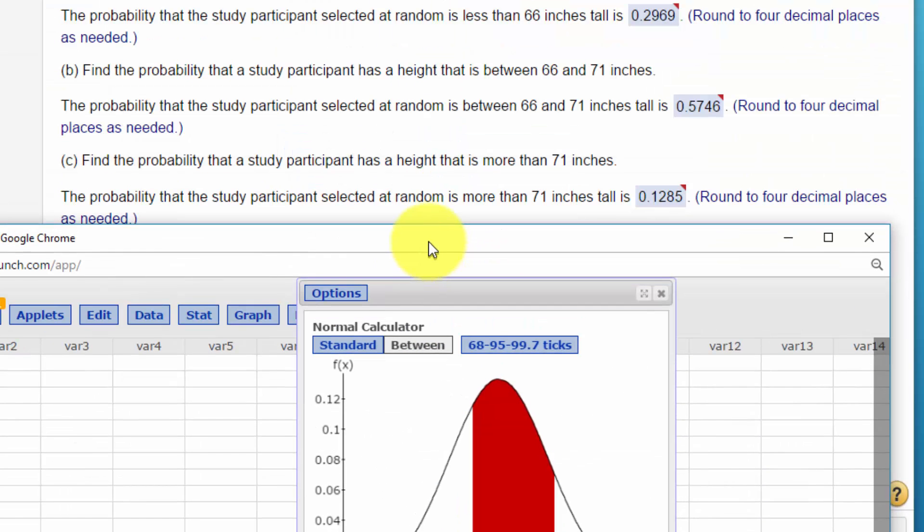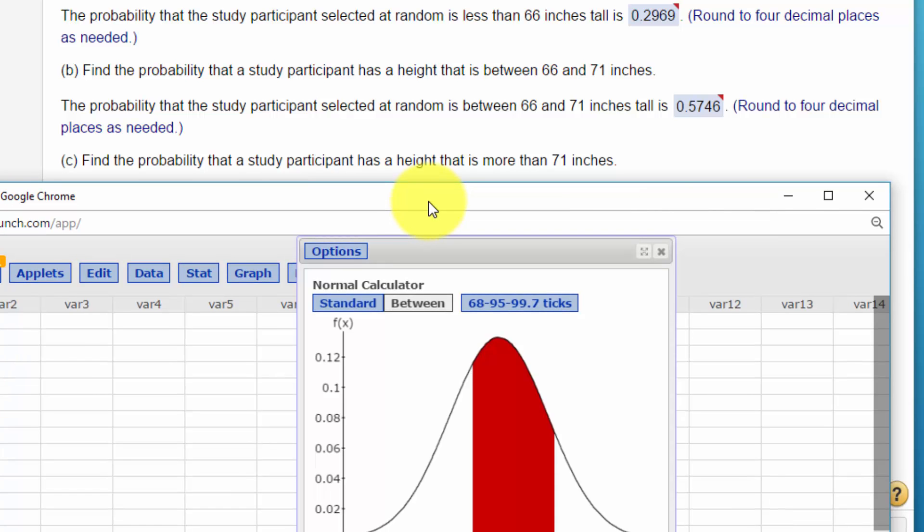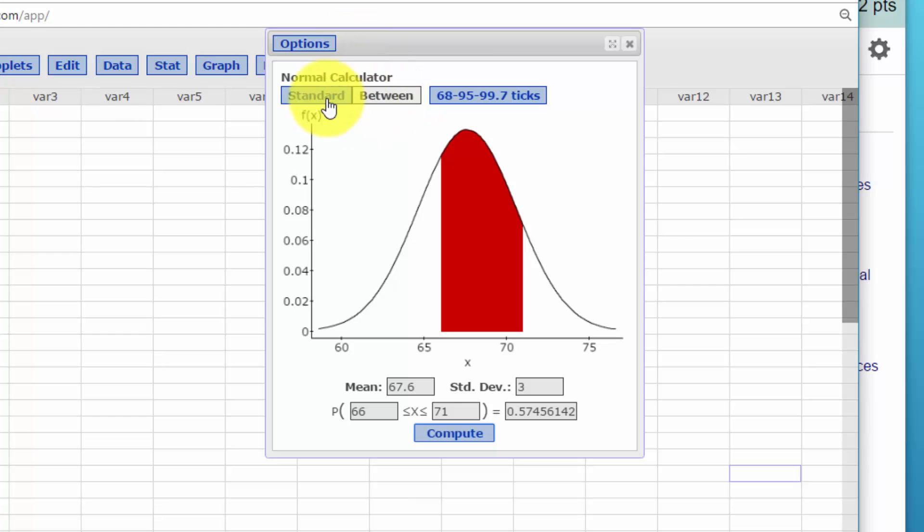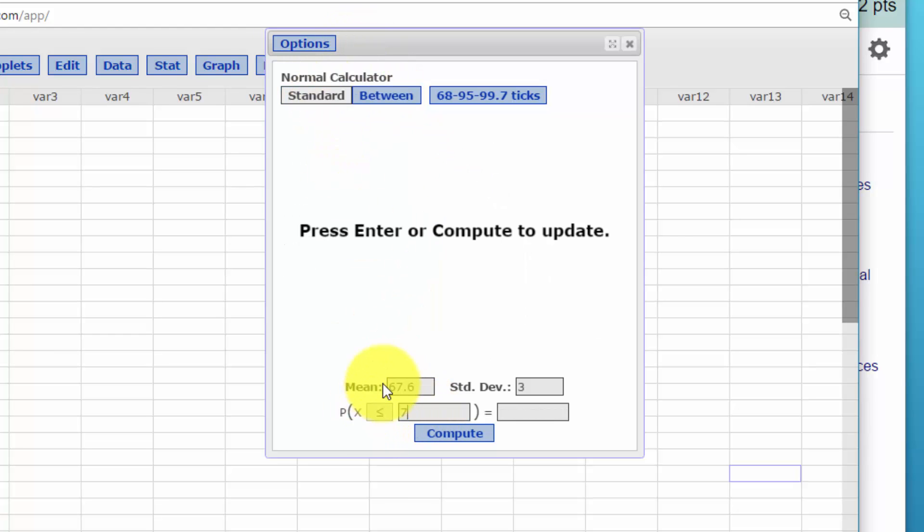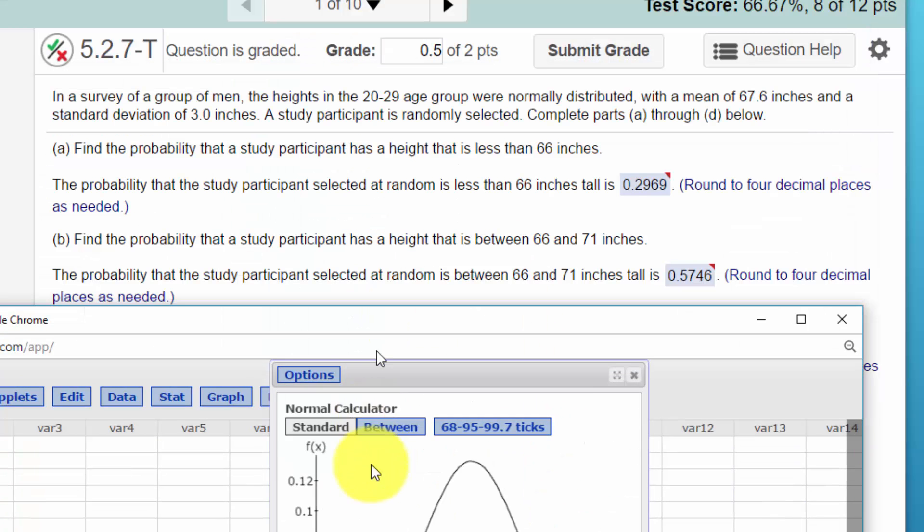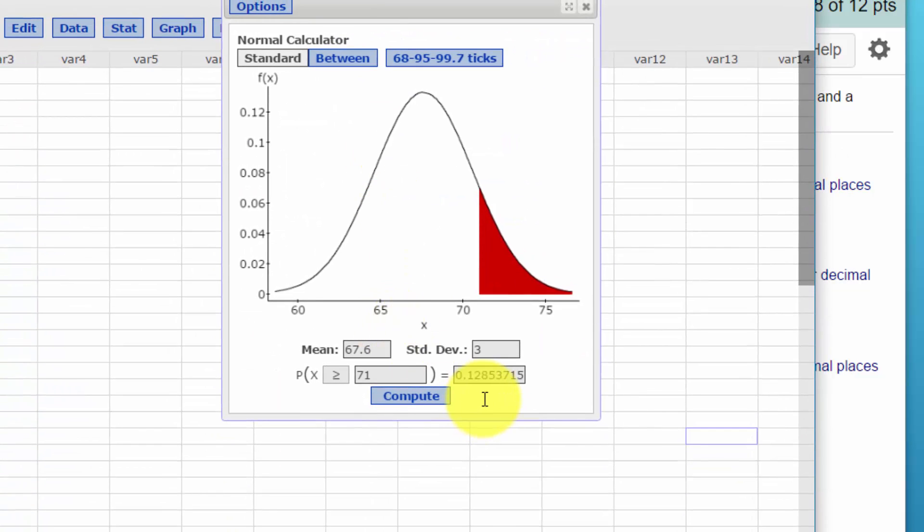The last question is, find the probability of a participant having a height more than 71. So let's go back to our standard size. We're going to put 71. We want the greater than symbol pointing to the right because we want the area to the right. The percentage of people that were taller than 71 inches, their probability. And that's 0.1285, which is the answer they have, 0.1285.